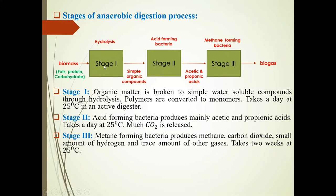In Stage 2, the simple organic compounds produced in Stage 1 by the hydrolysis process are fed into this stage. Here, acid-forming bacteria come into picture. They produce mainly acetic and propionic acids. At 25 degrees Celsius, this takes one day and much sugar is released here.